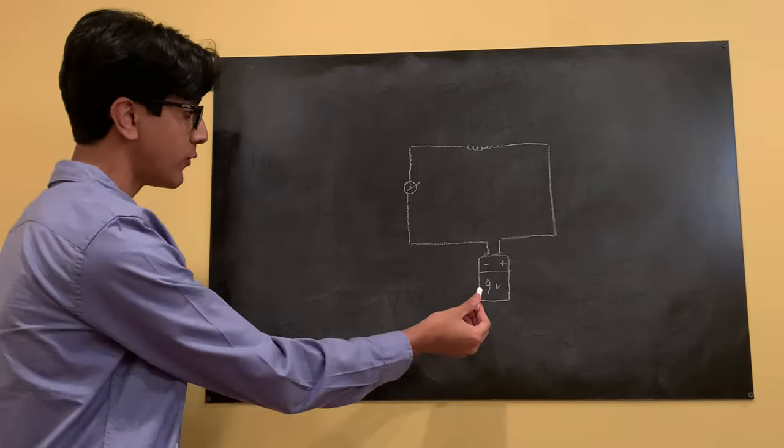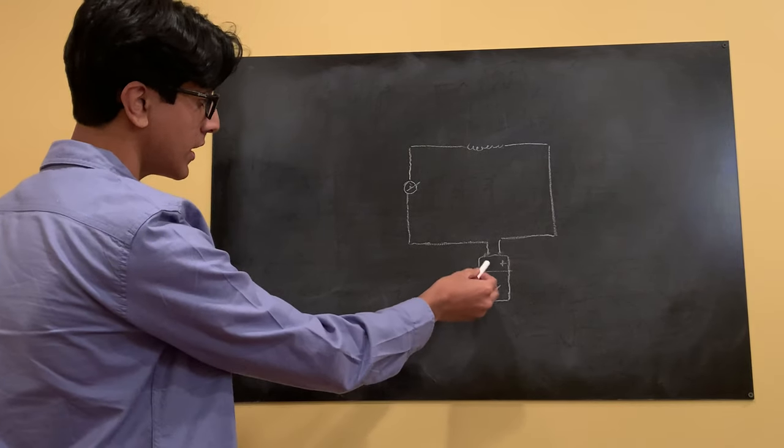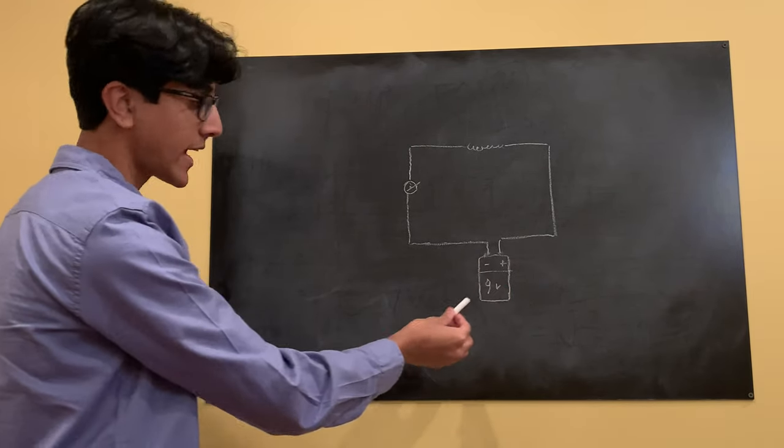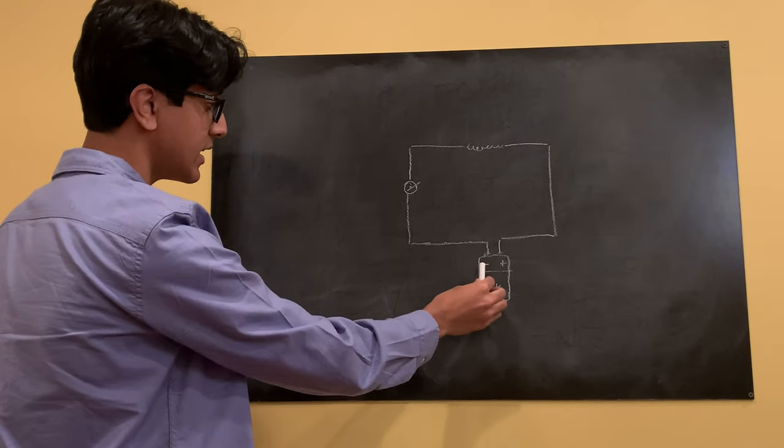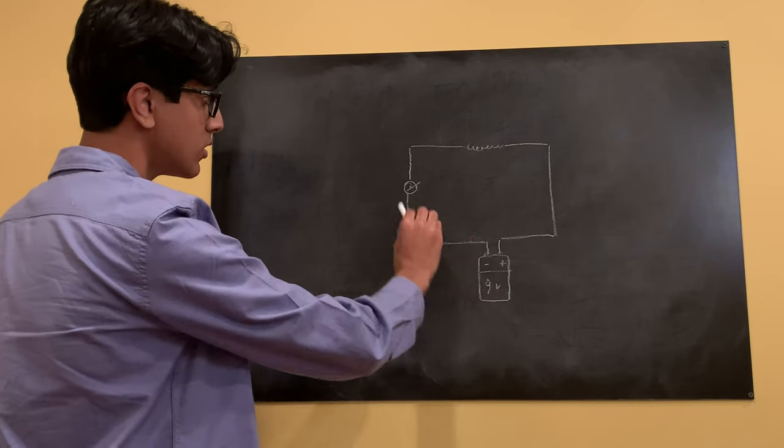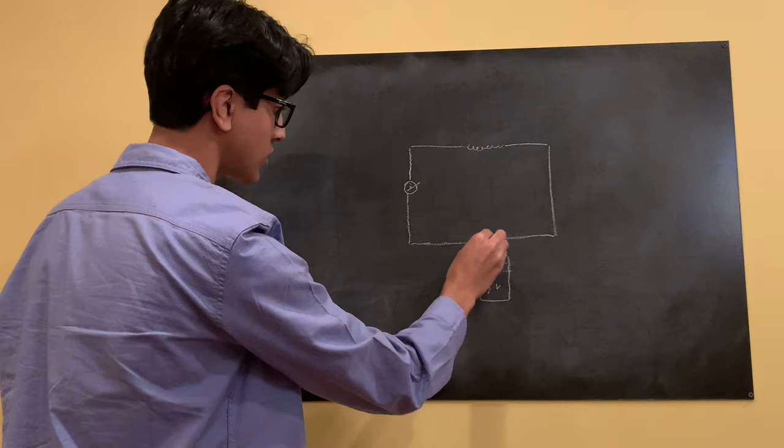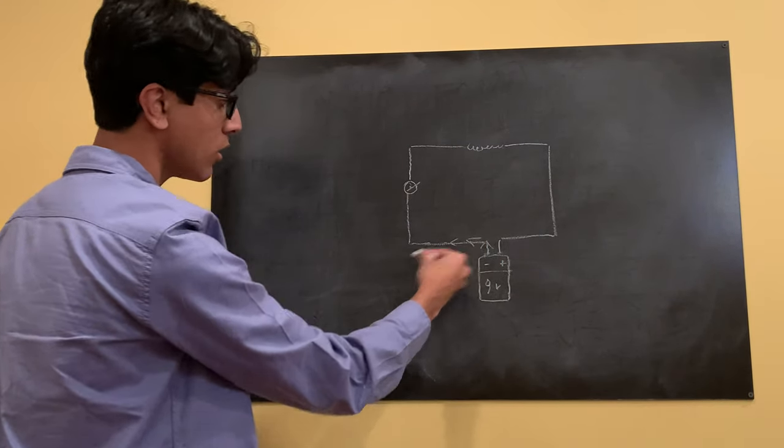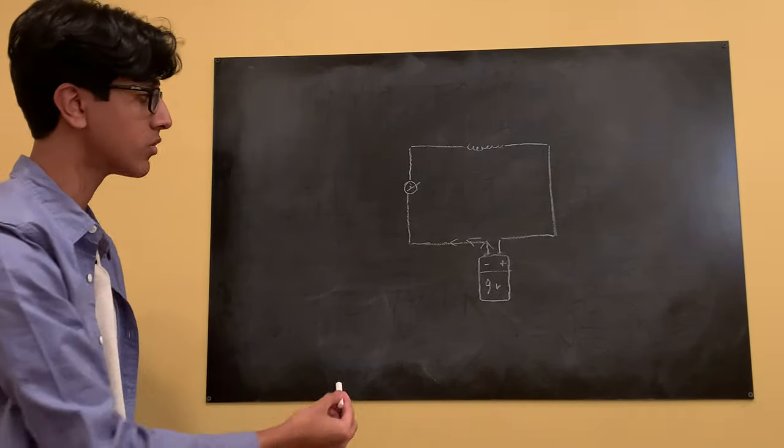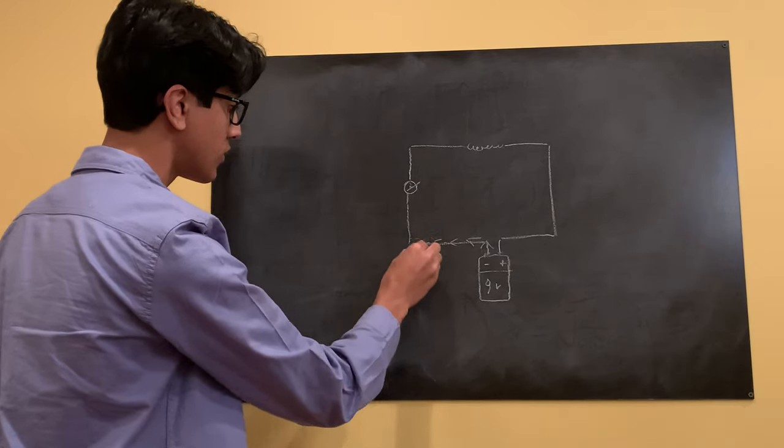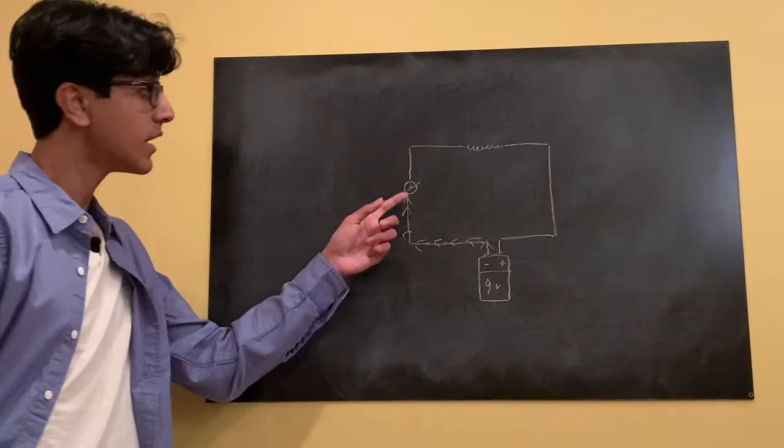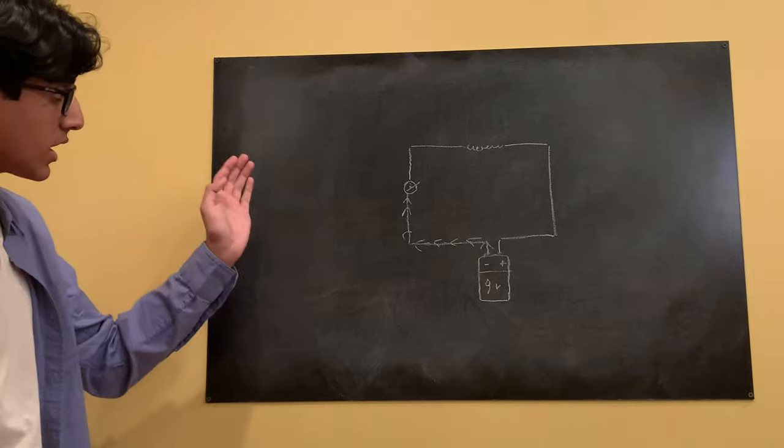So we're going to be using a 9 volt battery where electrons travel from the negative end of the battery to the positive end, traveling along a wire, most likely going to be using a copper wire for this, until it reaches a button right here.